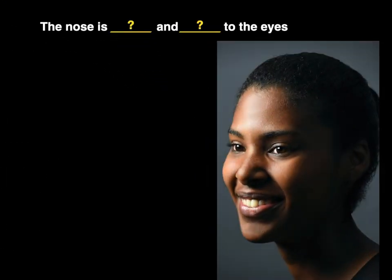Question number one: the nose is blank and blank to the eyes. Well, the nose is between your eyes and it's below them. So the nose is inferior and medial to the eyes.